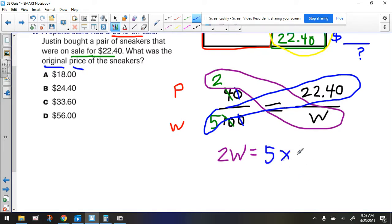5 times 22.40, which, by the way, is the same thing as 22.4. So in the interest of pressing fewer buttons on the calculator, I'm going to put it as that. But feel free, if you want to add that zero, that's perfectly fine too.